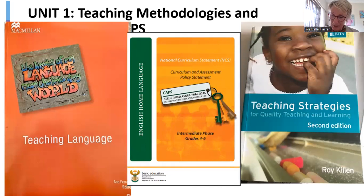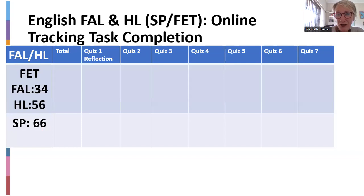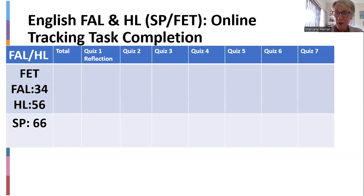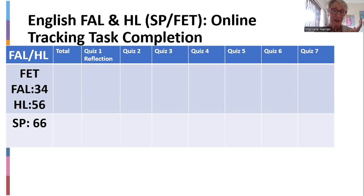Your online tracking — I will give you a clip of this every time I speak to you. There are 10 online trackings this semester. I did a quick check: on Friday there were 34 FETs registered, normally about 90 are registered. Home language FET 56 is also about 90 usually. SPs are 66, normally about 120. Those are the current numbers registered at this point. Your first online tracking task is a reflection task where you'll write and tell me about yourself in 500 words.